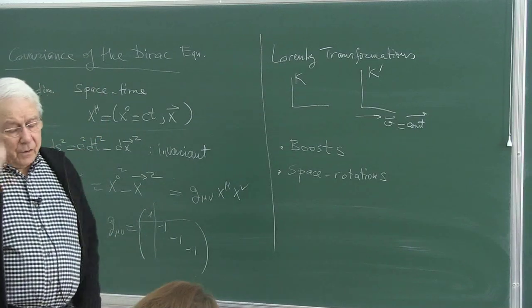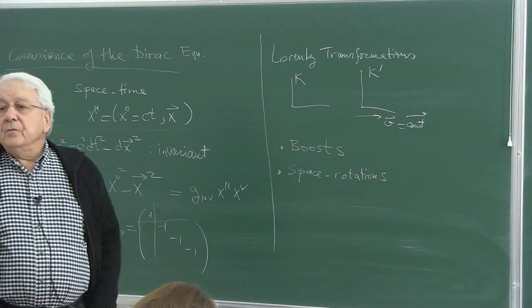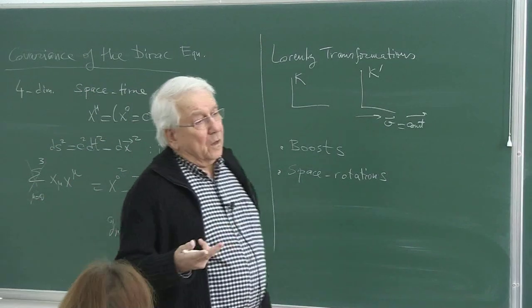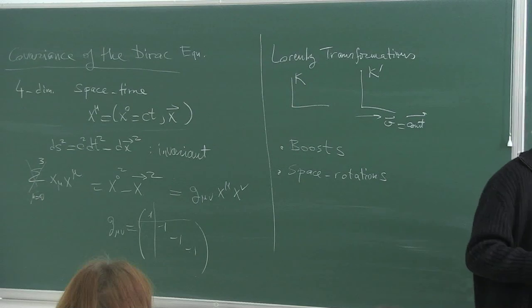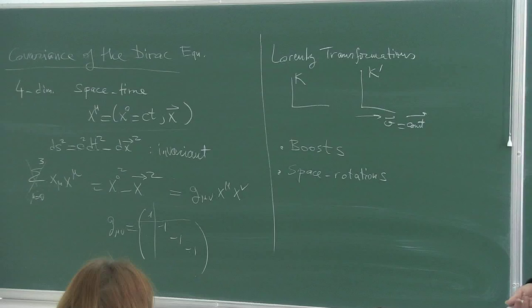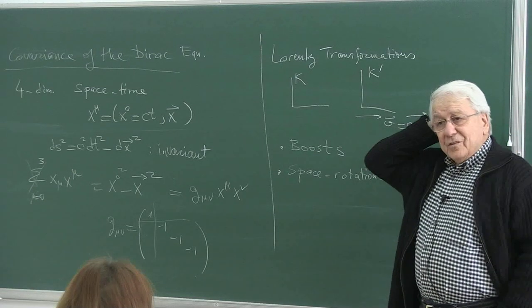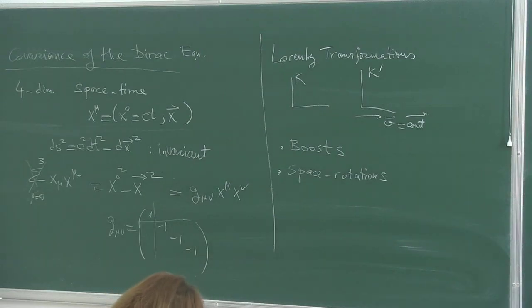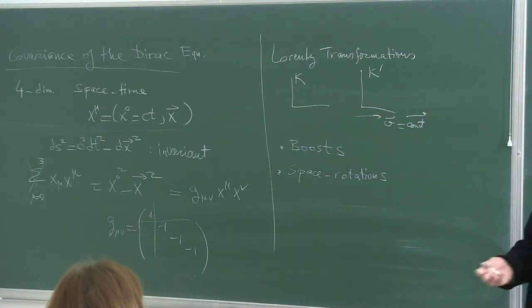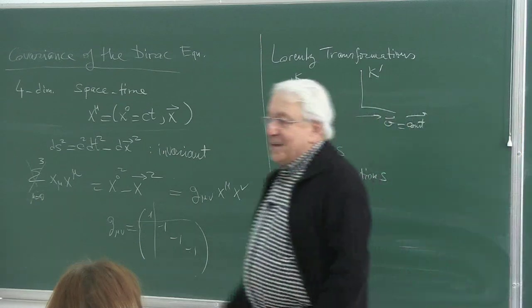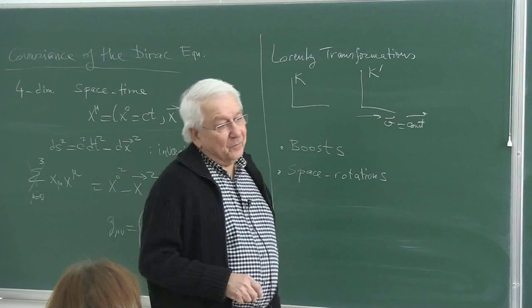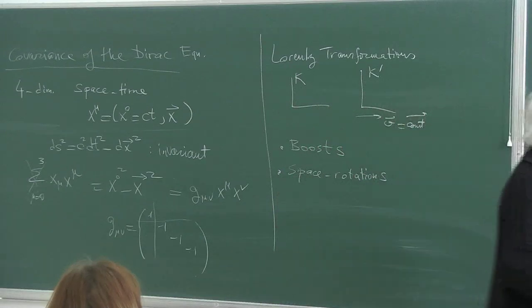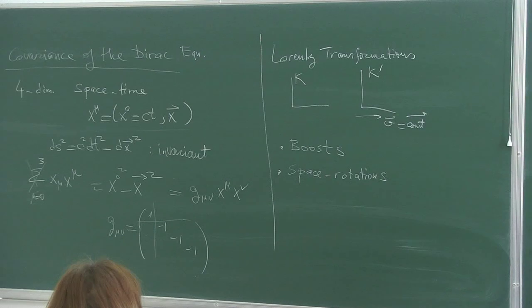The definition of covariance is form invariance — having the same form in any inertial frame. Why is that crucial? The basic postulates of the special theory of relativity include the invariance of the speed of light with a universal finite value, and the old postulate common to both Einstein and Galileo: the laws of physics should be the same in all inertial frames.